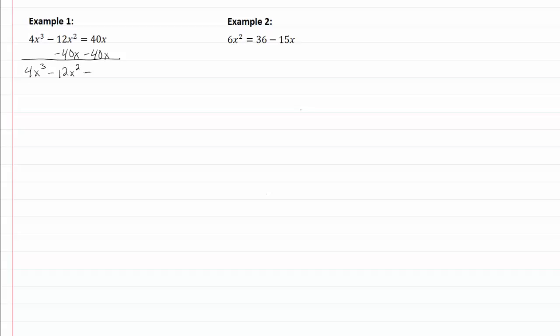I will write it in descending order, and let's see we've got 4, 12, and 40. It looks like they have a common factor of 4, and they all have x's, so x is a common factor also.